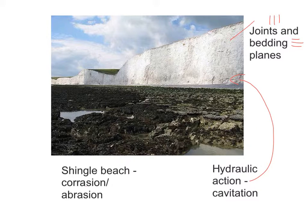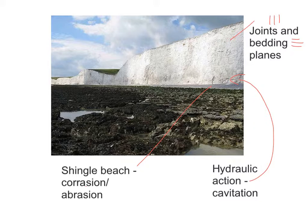Not only is it hydraulic action, but you would also have to incorporate the idea of cavitation — the release of air bubbles as the wave pounds the cliff. If you have a very keen eye you may spot the shingle beach, and at high tide with very powerful waves you would be expected to state that corrasion or abrasion happens as a result of the shingle beach being there. Both of these processes of erosion will cause the cliff to retreat over time, enlarging the wave cut platform.